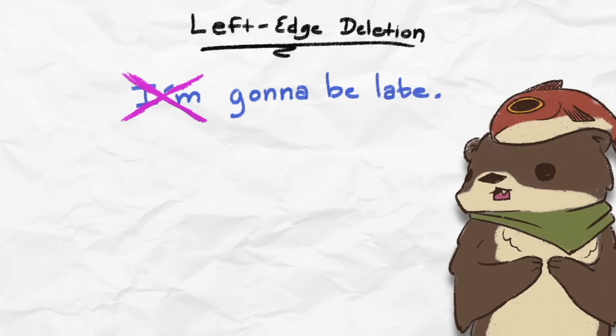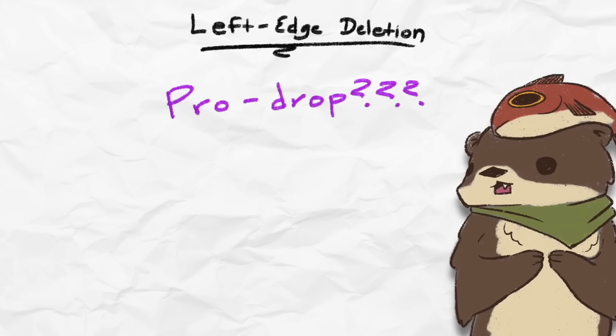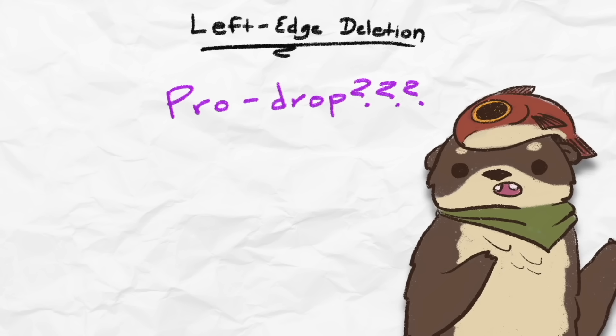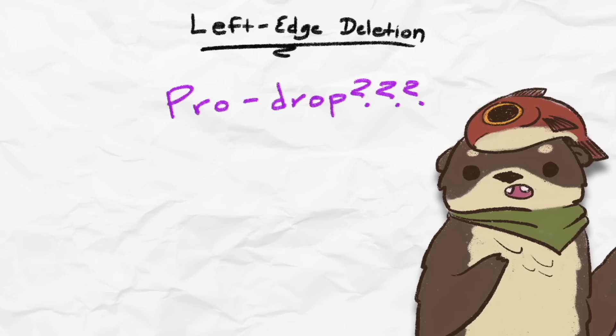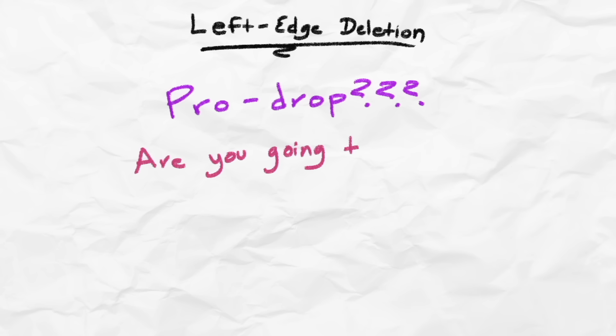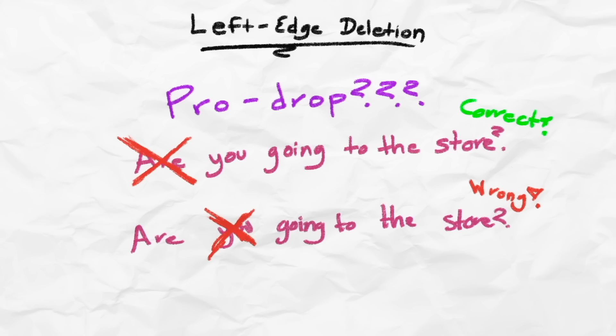So, based on these examples, could we say that future English might become a pro-drop language? Well, no, because what's happening here isn't that the pronoun is being dropped, rather, the leftmost word in the sentence is being dropped. For example, take the sentence, are you going to the store? If we took out the pronoun here, it would sound completely ungrammatical, are going to the store.